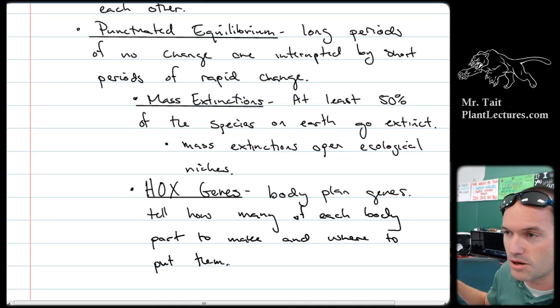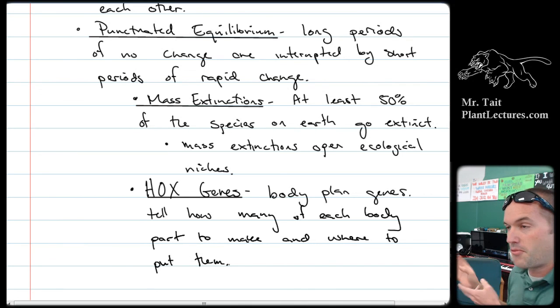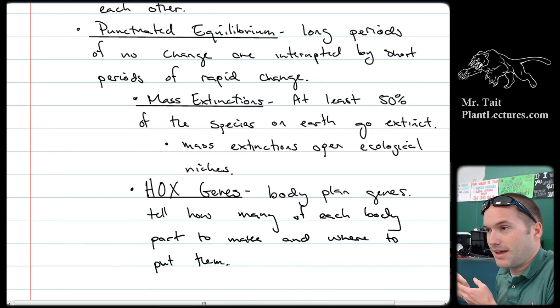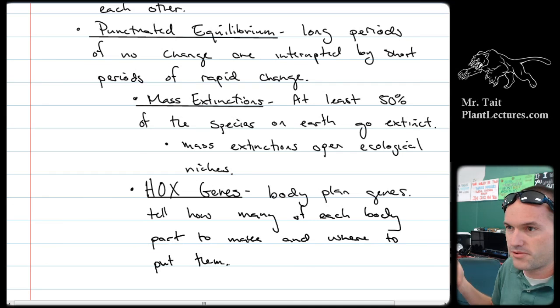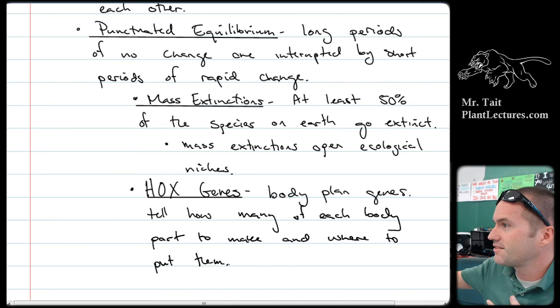Hox genes are really great at changing body plans rapidly. So when you look at arthropods and stuff, right, like insects, insects are characterized by having different amounts of legs, right? So you could have an arachnid, right, that has eight legs versus an insect that has six legs versus a myriapod that, like, those are centipedes and millipedes that have lots and lots of legs, right? So how do they get so many more legs?